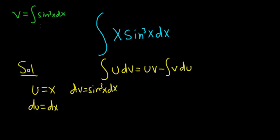So it's an odd power of sine. What you can do is save a sine and then convert the rest to cosines using identities. So whenever you have an odd power of sine or cosine, you can save a copy of that power and then convert the rest to the other one.